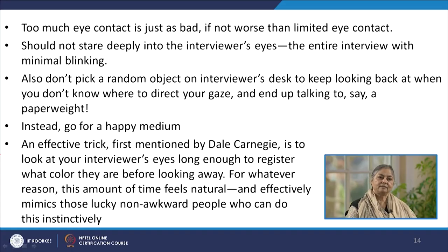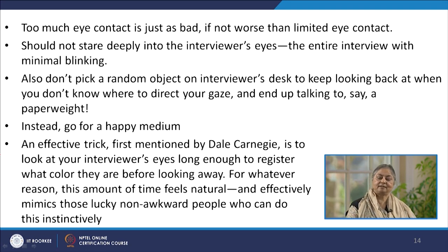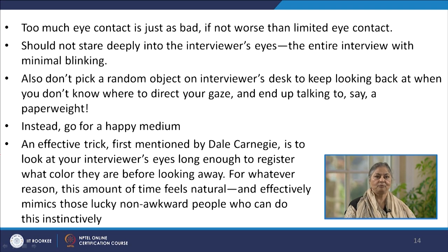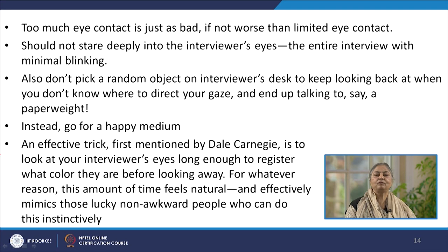So what strategies can we adopt to avoid this tension? In order to avoid these situations, sometimes people try to pick up a random object — for example, a paperweight lying on the table — and keep looking at it, ending up talking to a paperweight instead of the interviewer. However, if a negative eye contact is bad, too much eye contact is equally bad, if not worse. If somebody stares deeply into the interviewer's eyes, the entire interview may end up with minimal blinking, creating a very strange impression. In order to avoid these two extremes, we should try to plan for a happy medium.